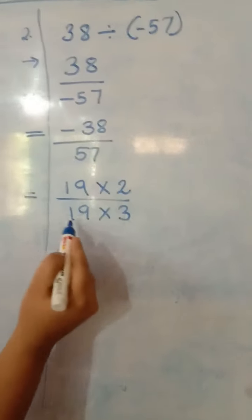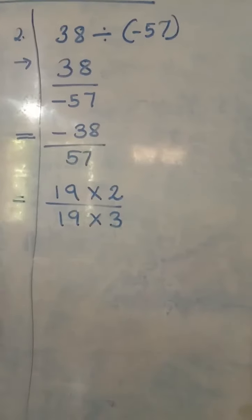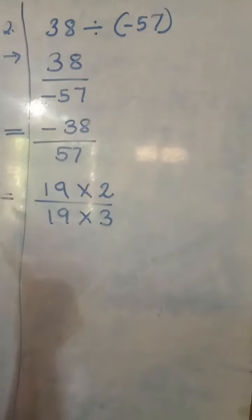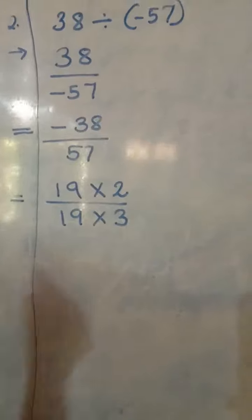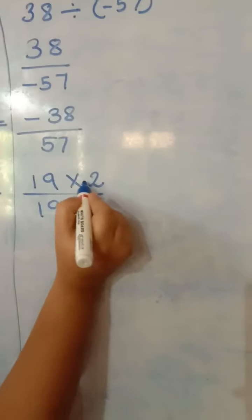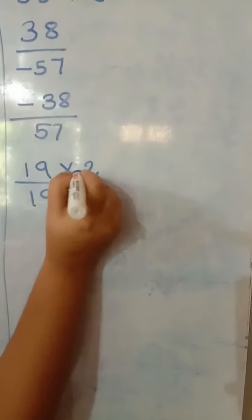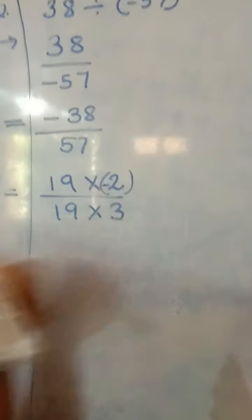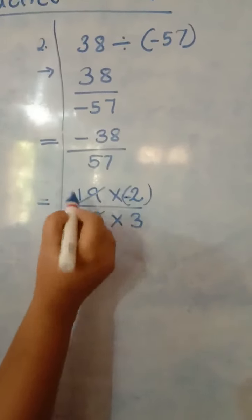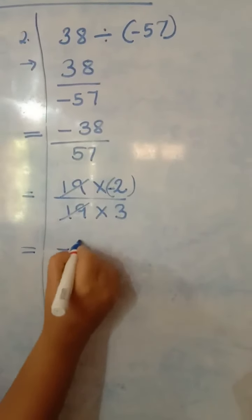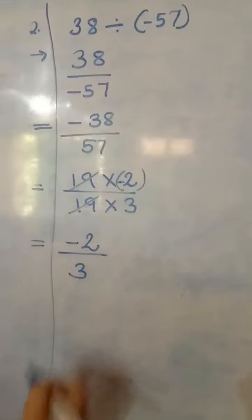57 is positive, so there is no need to think about its sign. But for the numerator we need a negative result, so the negative sign goes to one number. We give it to 2 because 19 and 19 cancel. The remaining answer is negative 2 upon 3.